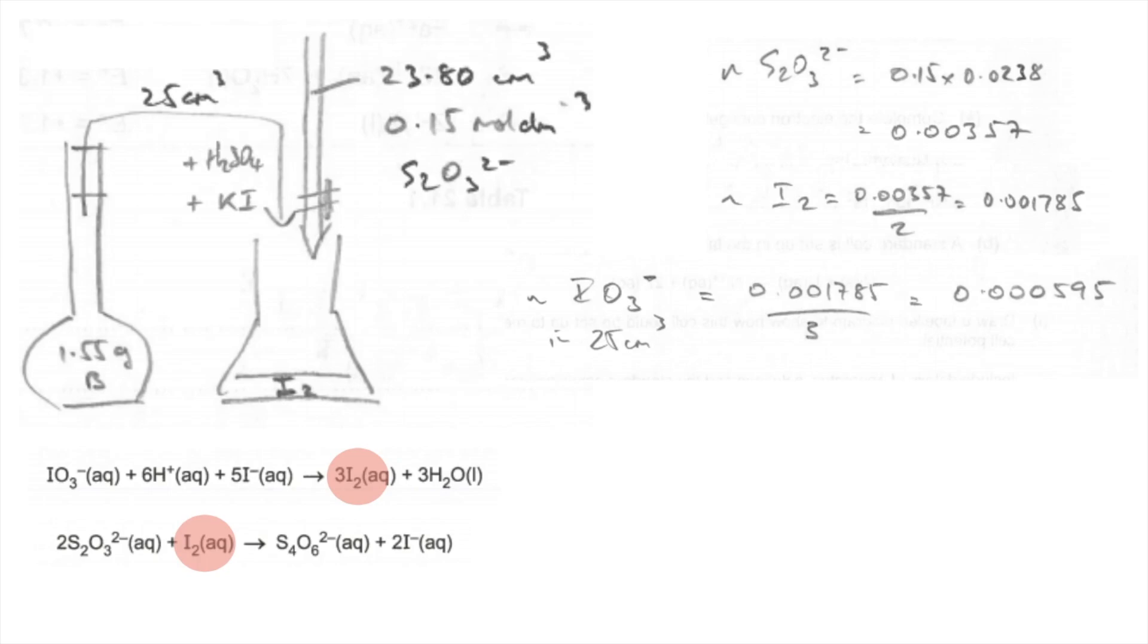And then obviously, in that flask, it's going to be 10 times that. So we now know the moles. We knew the mass that was dissolved. So the MR of B is the mass over the moles, 260.5.